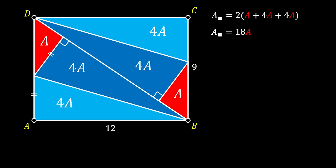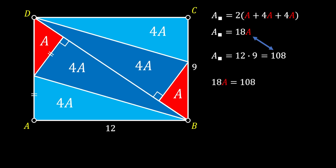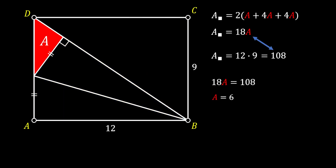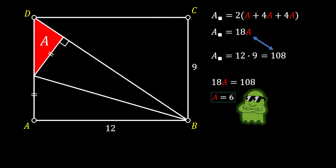We can also calculate the area of the big rectangle as the product of its base and height, which equals 108. Since both expressions equal the area of the rectangle, we set them equal to each other, giving us that the red area equals 6 square units. And again, we have our solution.